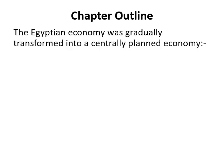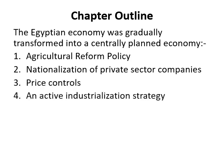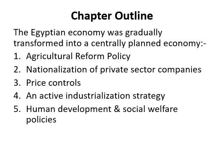The first item is about the agricultural reform policy, then nationalization of private sector companies. The third point will be about price controls, then fourth an active industrialization strategy, the fifth point is about human development and social welfare policy, and the last point would be about the war economy.